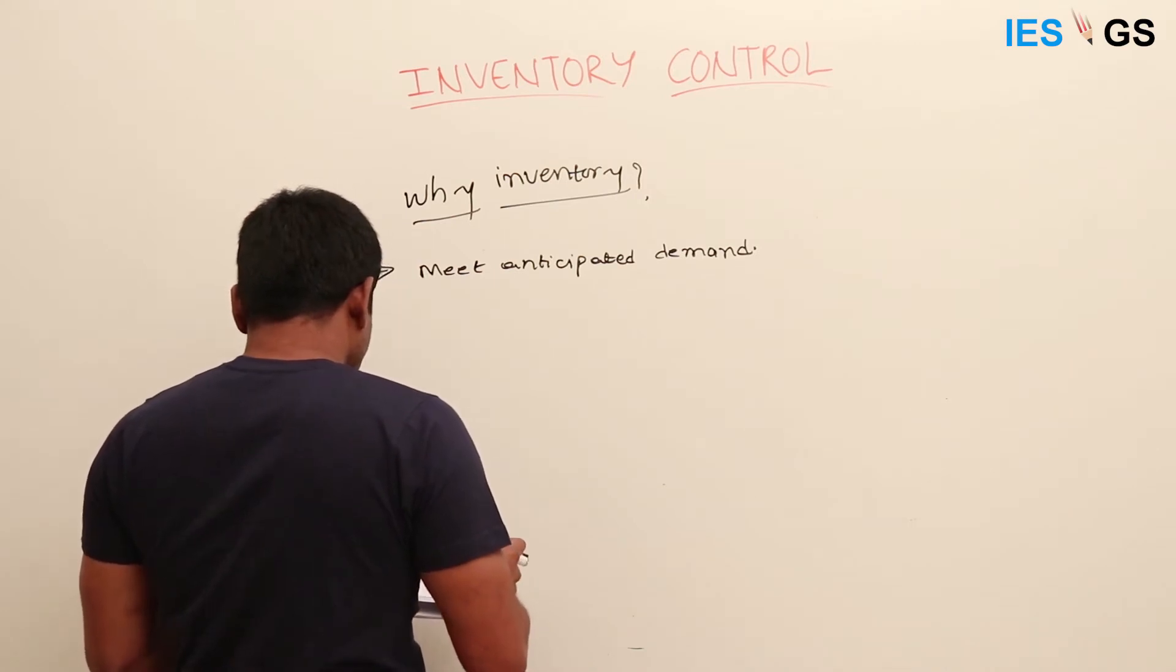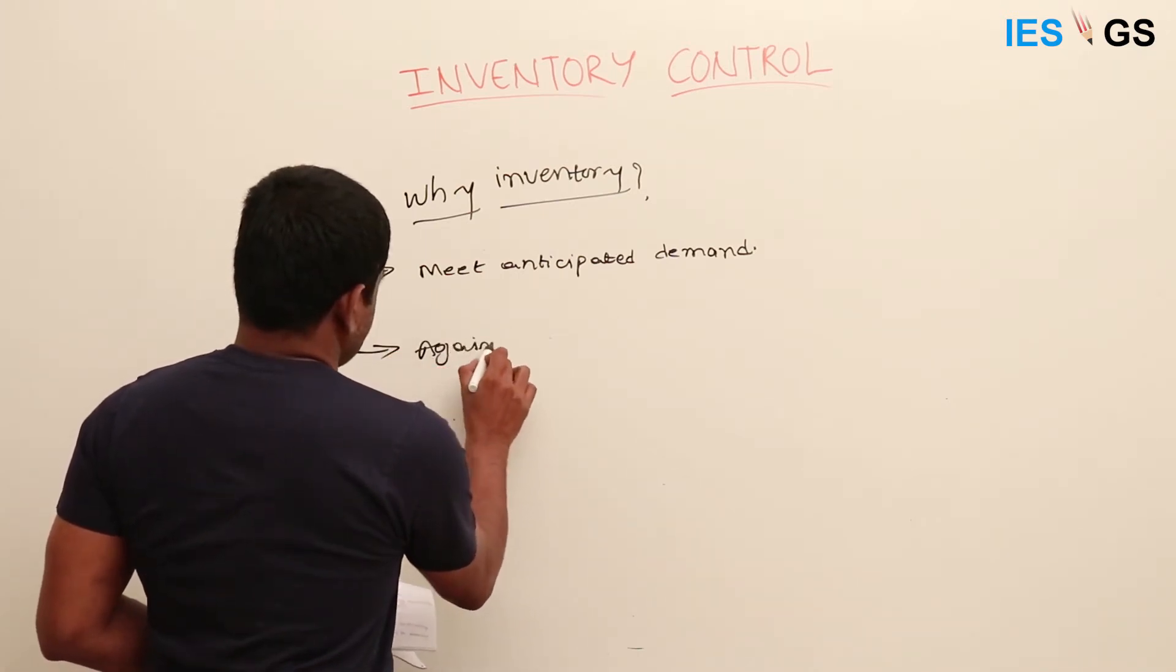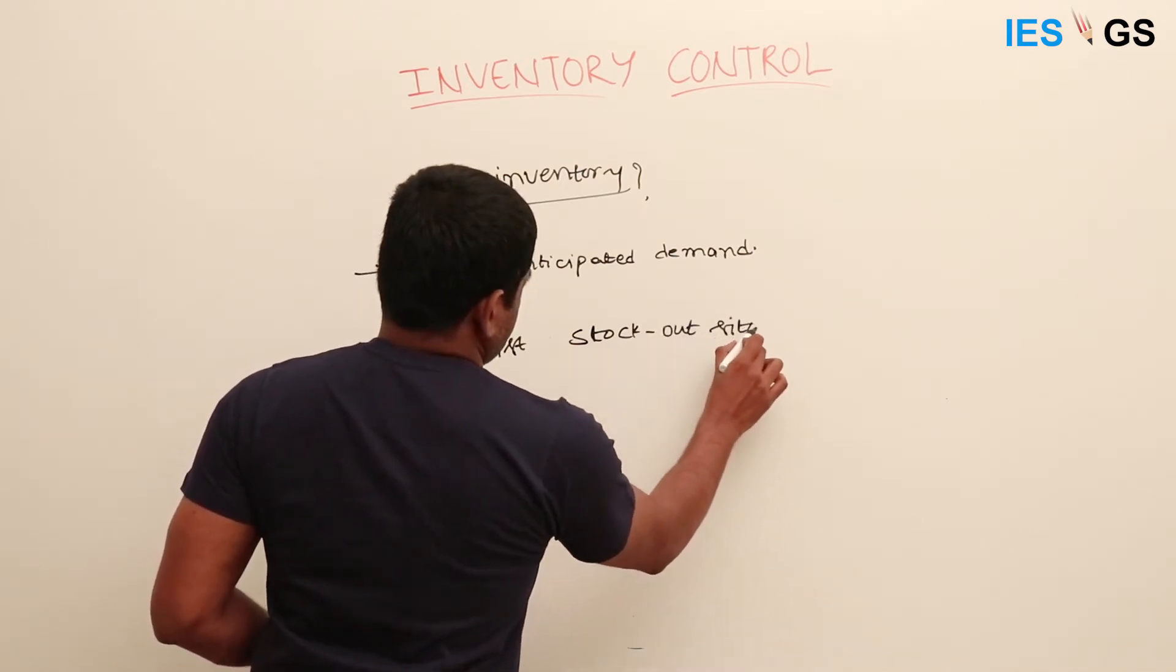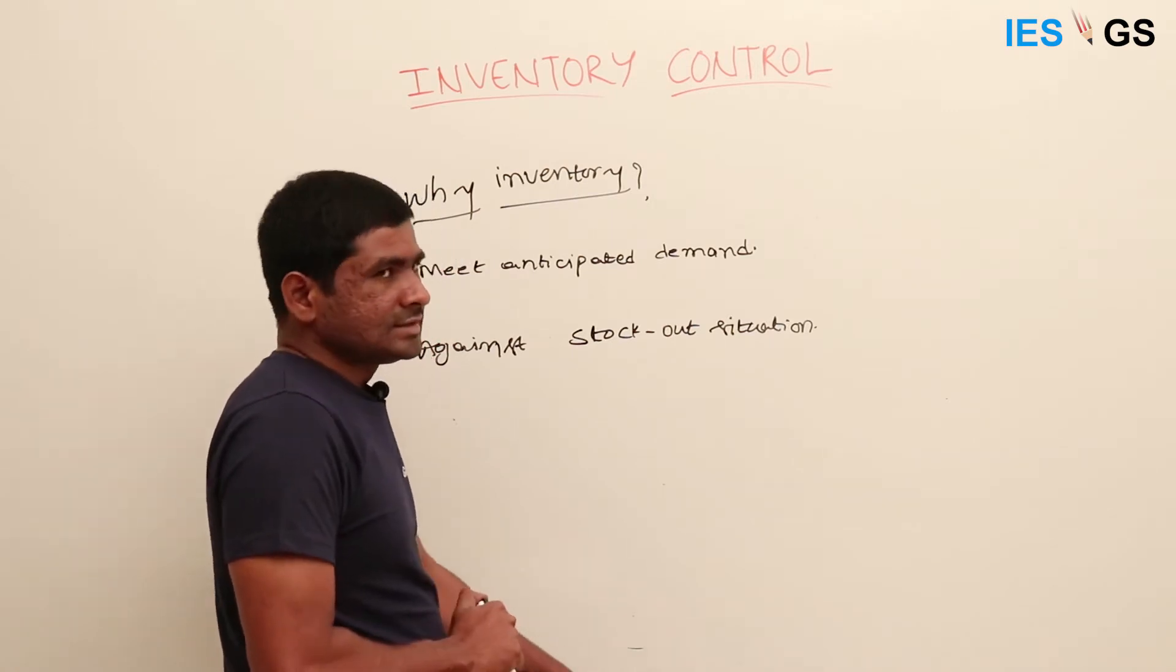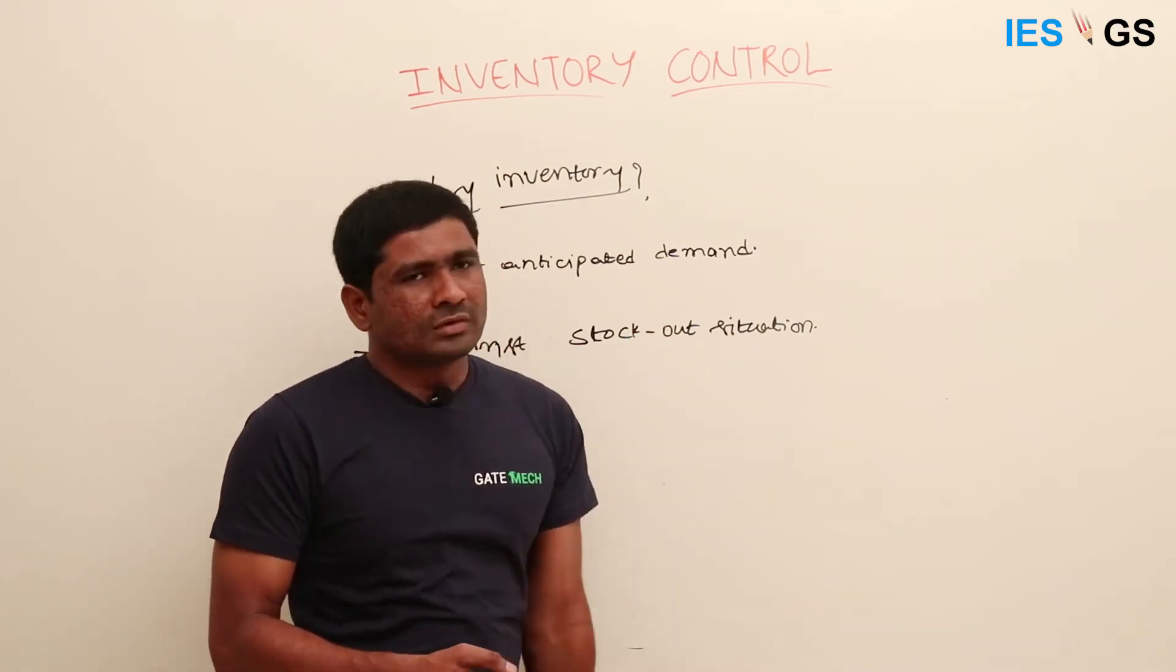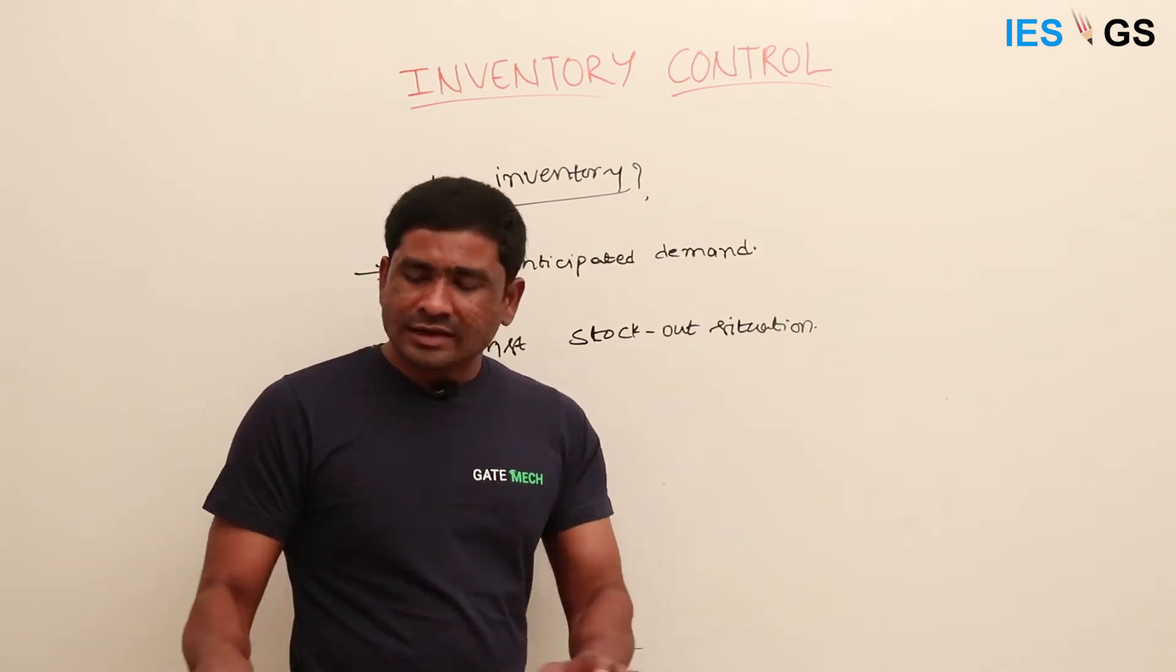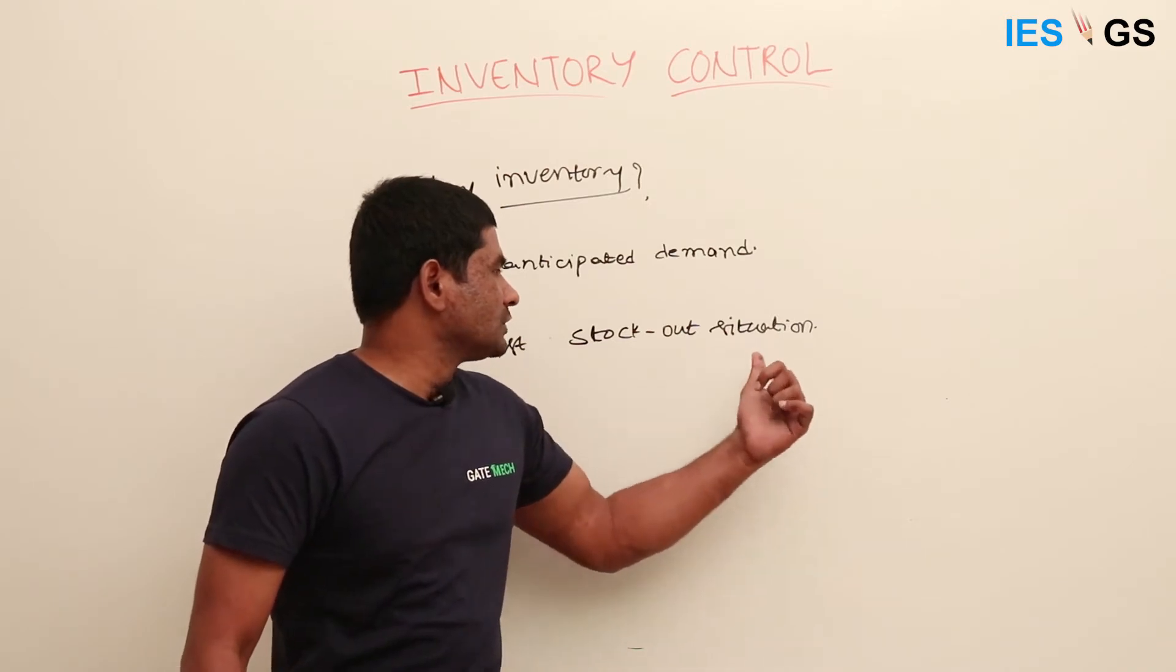It also guards against stock-out situations. What is a stock-out situation? Generally, there are some companies who follow JIT system—just-in-time system, which we will see in the next chapter. In case of JIT, they try to keep very less amount of inventory. What happens is they should have very reliable suppliers. If there is any disruption in the reliable supplier or the supply of raw material, then automatically they will face this stock-out situation.